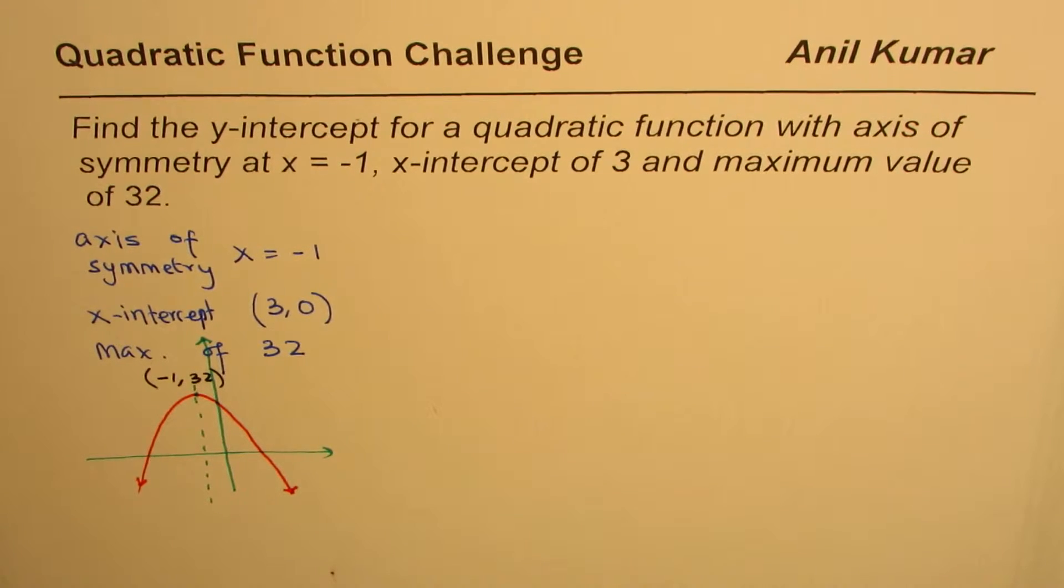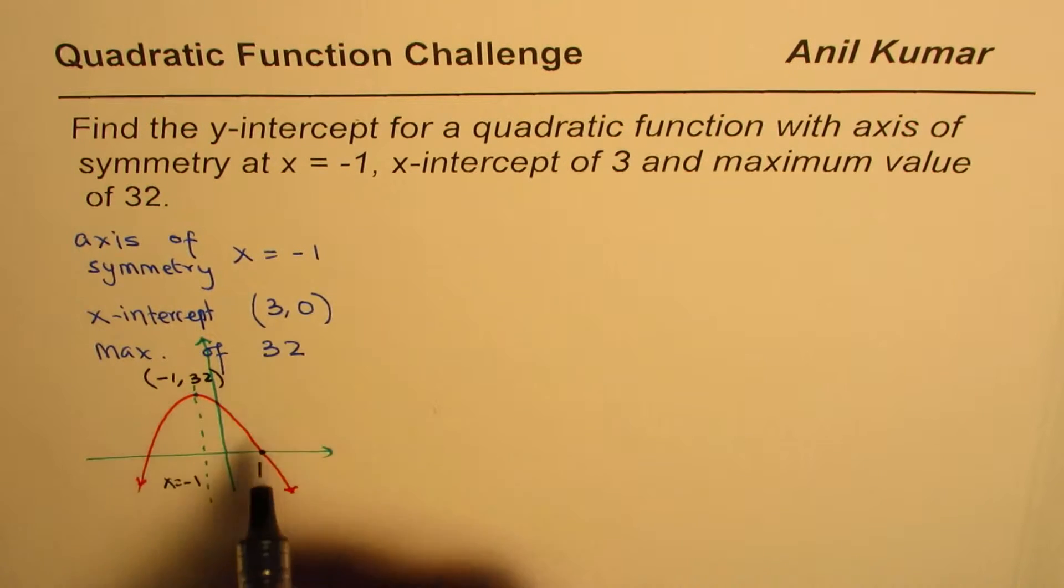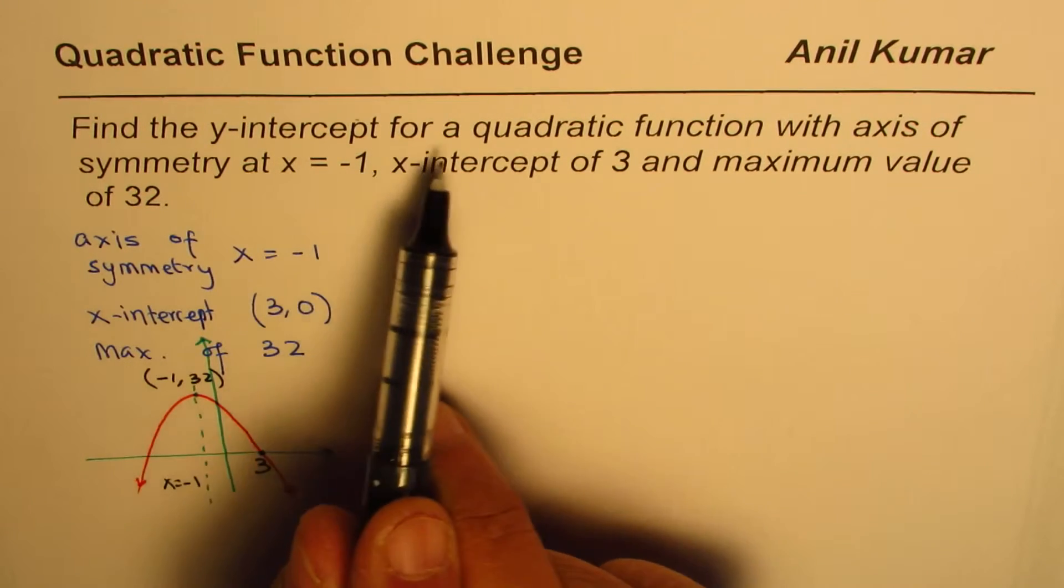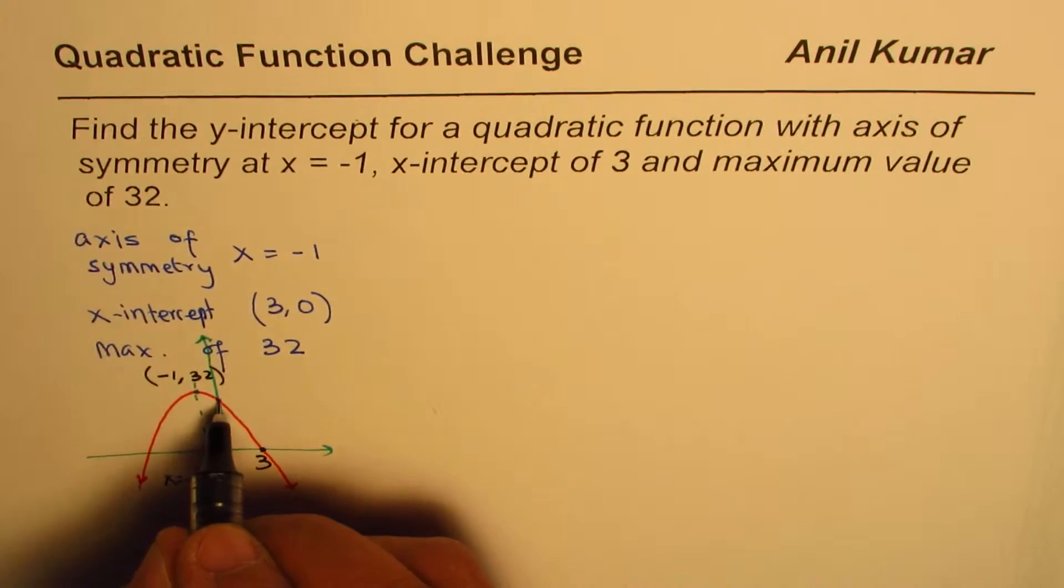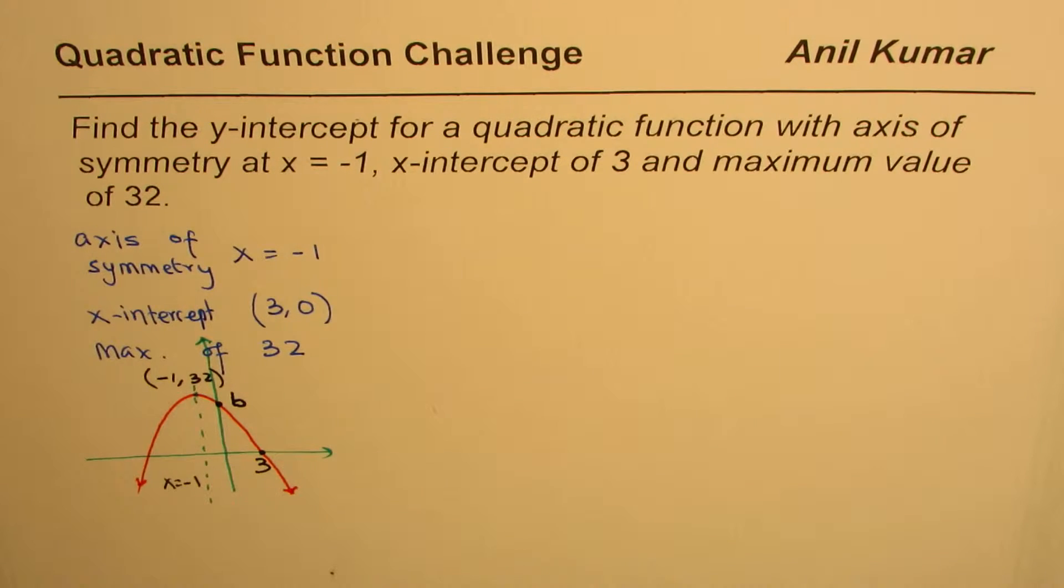Since the axis is at minus 1, this is x equals minus 1, and that point here is the x-intercept at 3. The question is find the y-intercept for a quadratic function. We need to find this point, right? Let's call this point as B, the y-intercept. I hope you understood the question. You can pause the video, answer, and then look into my suggestions.